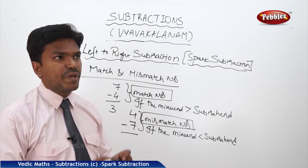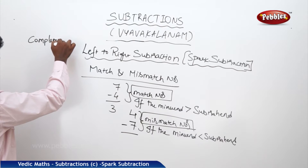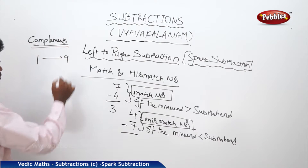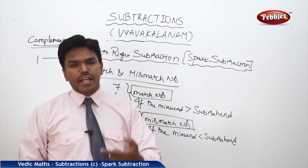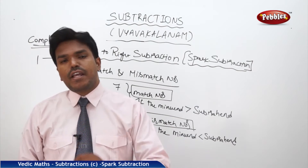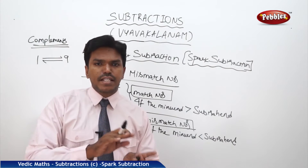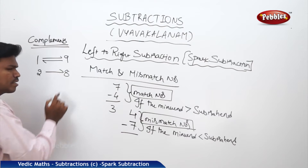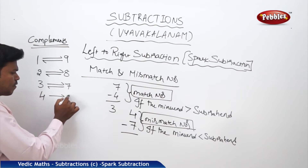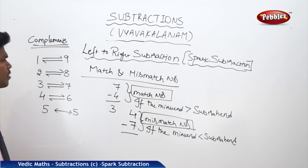The second important concept of this subtraction is complements. Complements are simply: for 1, to make it 10, how much do I need to add? 9. So 1's complement is 9. Similarly, 9's complement is 1. 2's complement is 8, 8's complement is 2. 3's complement is 7, 7's complement is 3. 4's complement is 6, 6's complement is 4. 5's complement is 5.